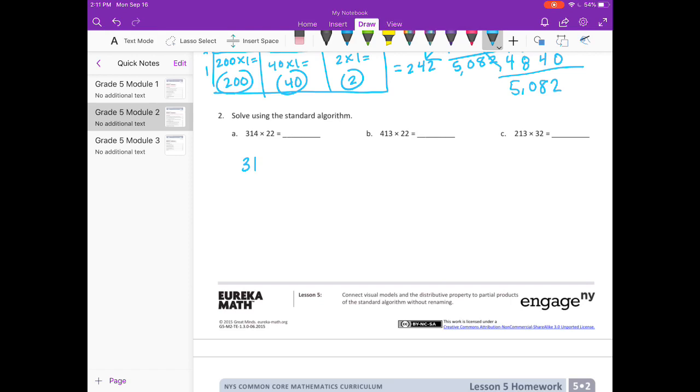So we have 314 times 22. 2 times 4 is 8. 2 times 1 is 2. 2 times 3 is 6. Put our 0 down. Now we're done with the ones place onto the tens. We always move from left to right. So I'm going to do 2 times 4 is 8. 2 times 1 is 2. 2 times 3 is 6. Add everything together. We get 6,908.